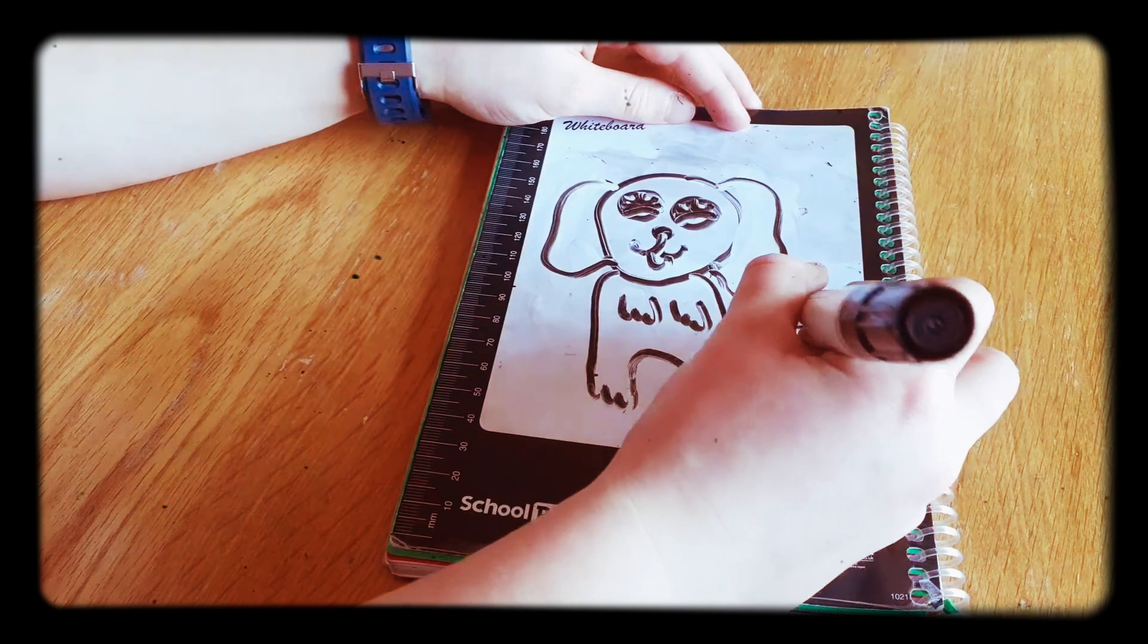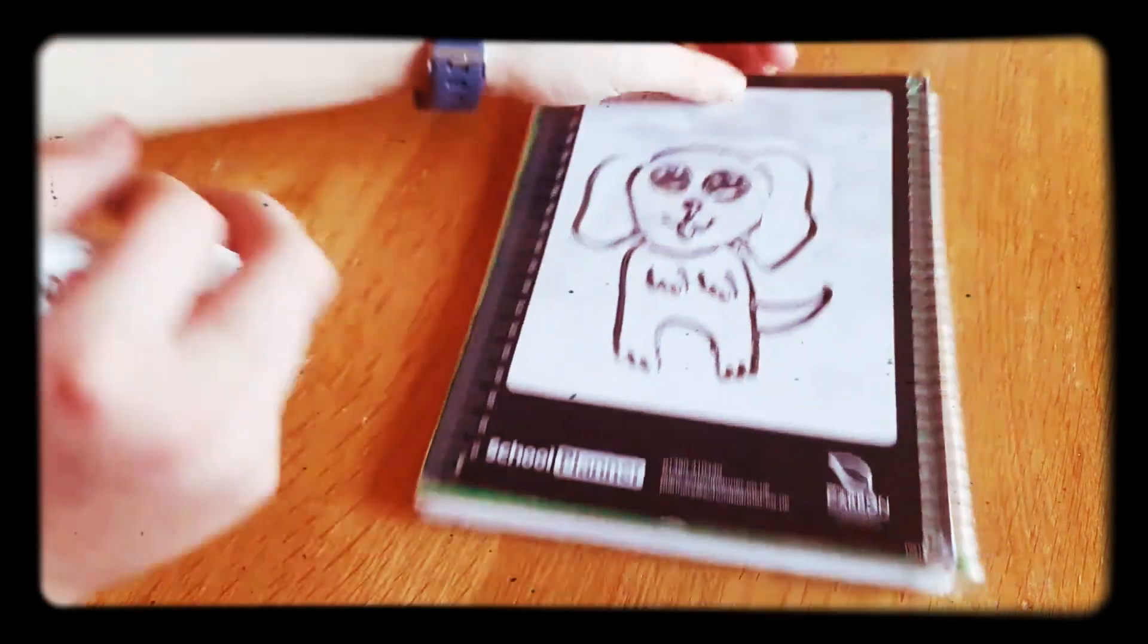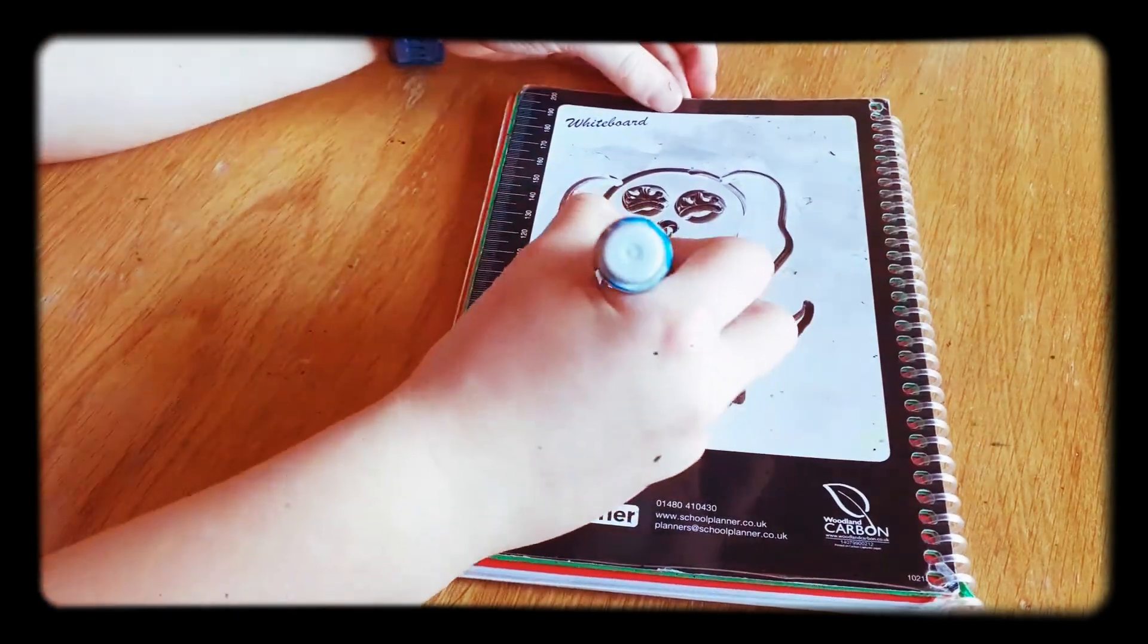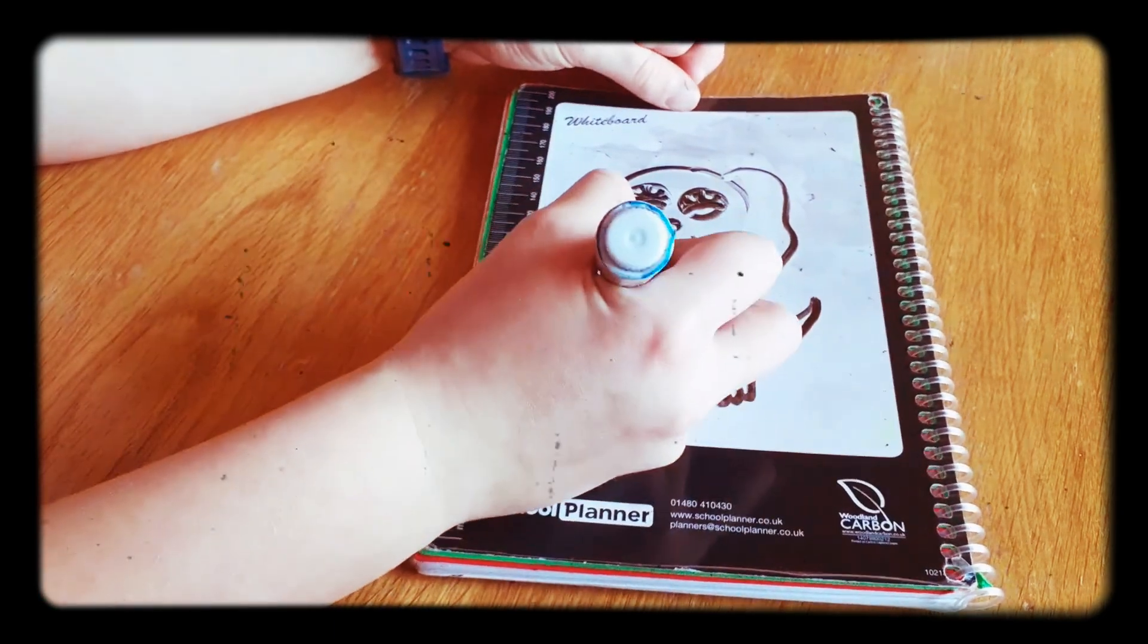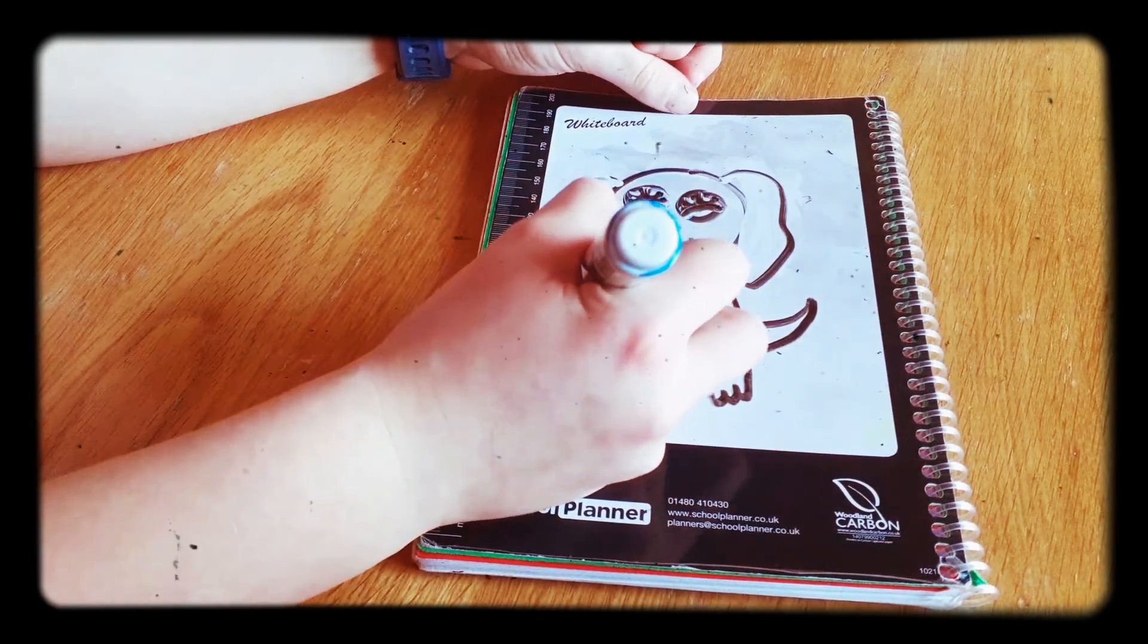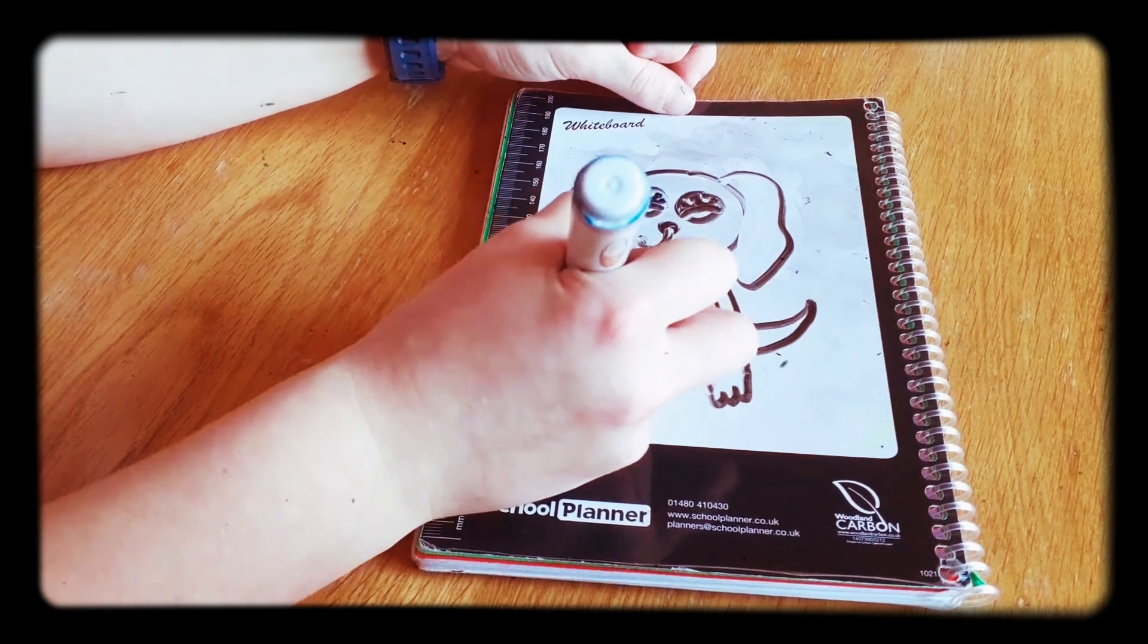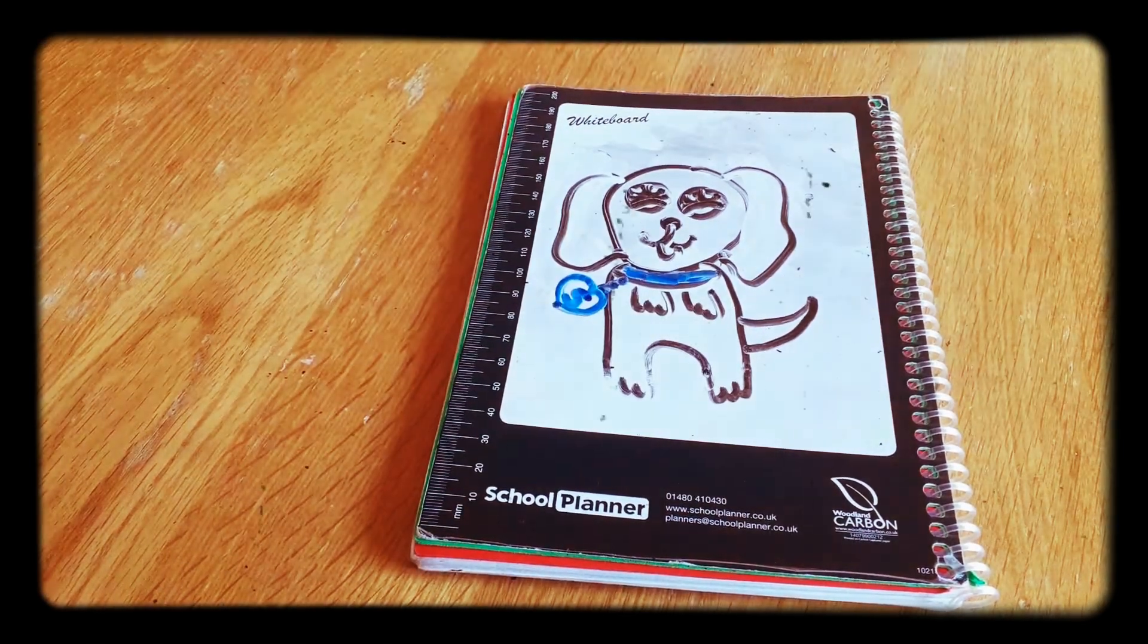Then do the tail like that. Then you personalize him. You can add a collar, do any color collar you can. Blue, green, or red. Then add your three small dots like that. Then do like a heart. Then you can write the initial for your dog's name. Mine's Scruff, so I do S. Then you've got a personalized dog.